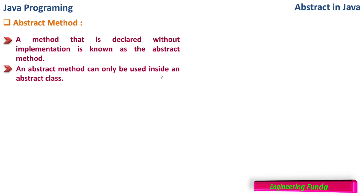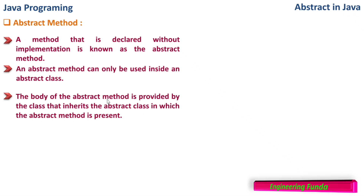An abstract method can only be used inside an abstract class, so when we have an abstract method the class must necessarily be declared as abstract. The body of the abstract method is provided by the class that inherits the abstract class. So if there is a class inheriting the abstract class, it is compulsory for that class to write the body of that abstract method.